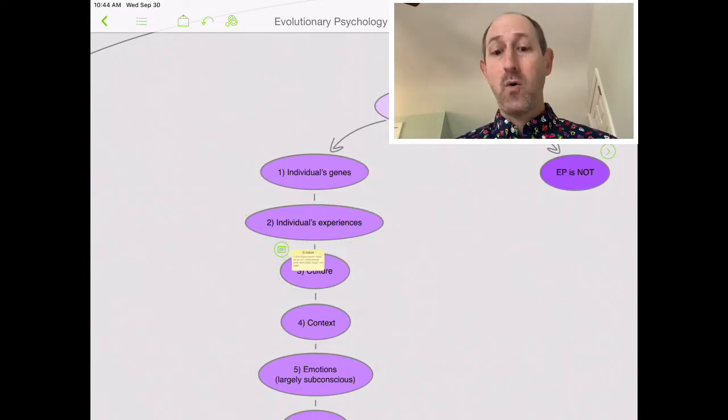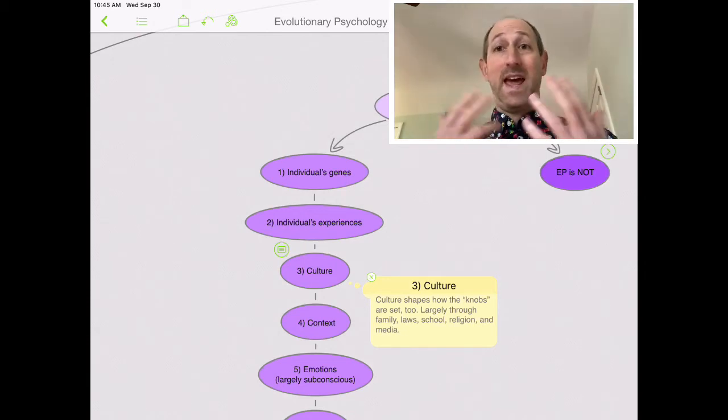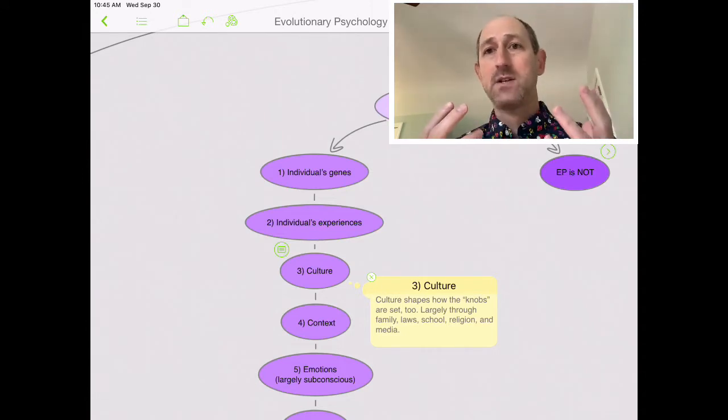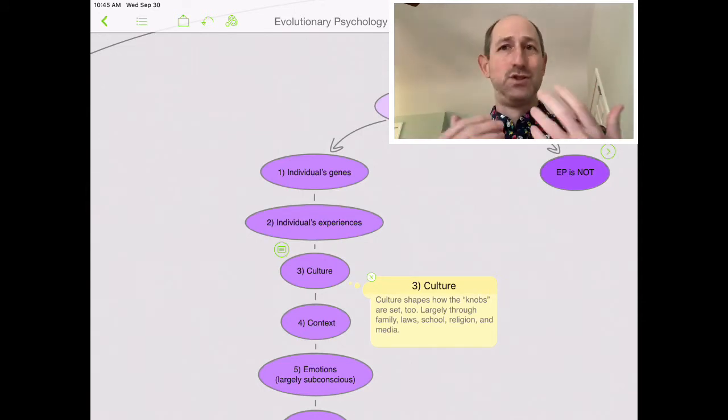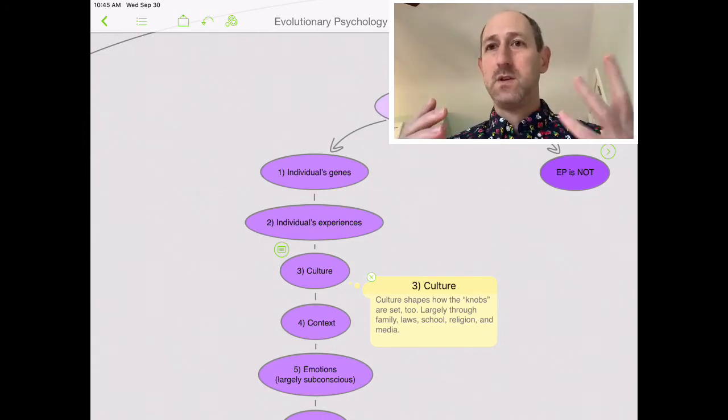Thirdly, the role of culture. Culture plays a huge role, again, interacting with our genes and shaping how the knobs are set. This is largely going to be through our familial influences. How are we brought up? How are we raised? What are the laws of the state or country where we live? When we get educated, what are they teaching us about how to act or how to believe? Religion, similar. What are we told about how the world should work, what you should be doing? And finally, media in all of its myriad ways is shaping how we think and feel and act as well. All of this is interacting with what we've evolved to have.